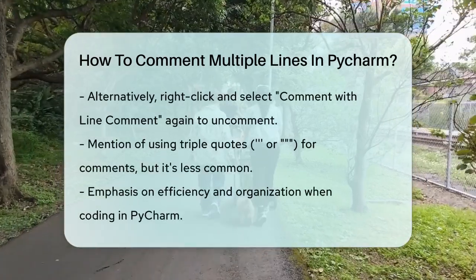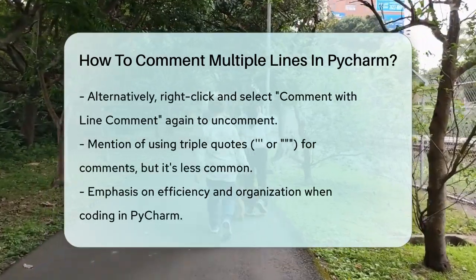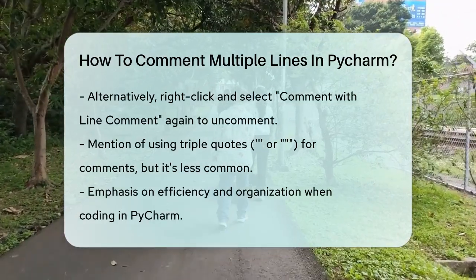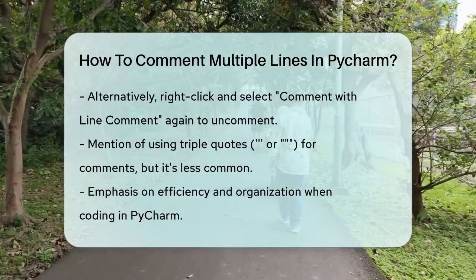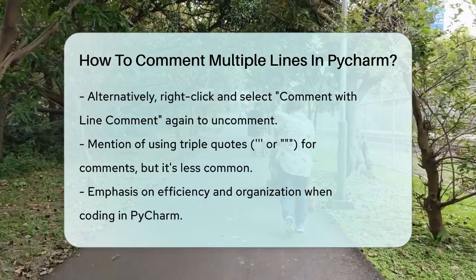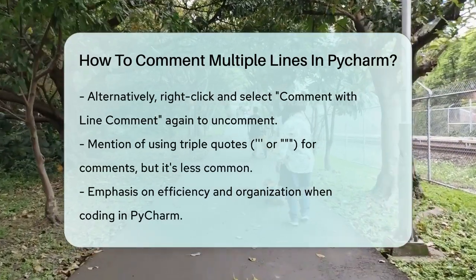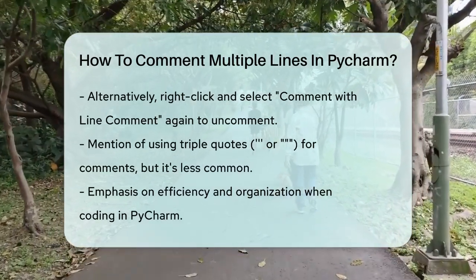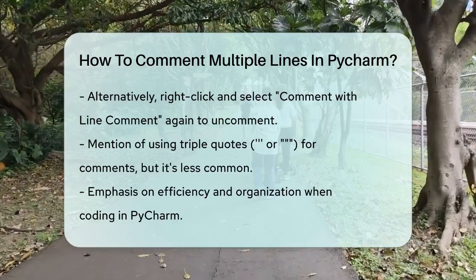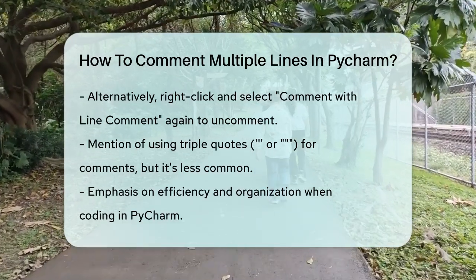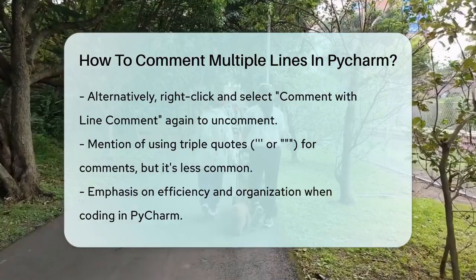Another method, though less common for commenting out code, is using triple quotes. But this is more typically used for docstrings or multi-line comments within your code itself. By using these shortcuts and methods, you can quickly comment and uncomment multiple lines in PyCharm, making your coding process more efficient and organized.